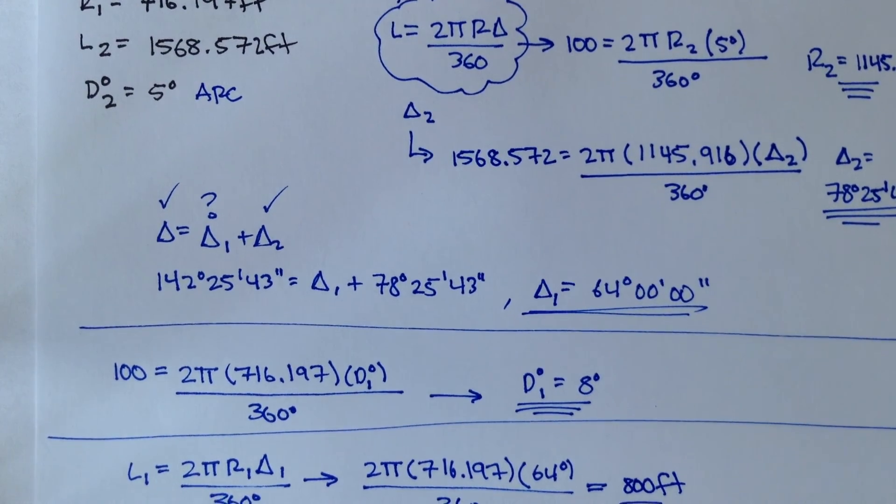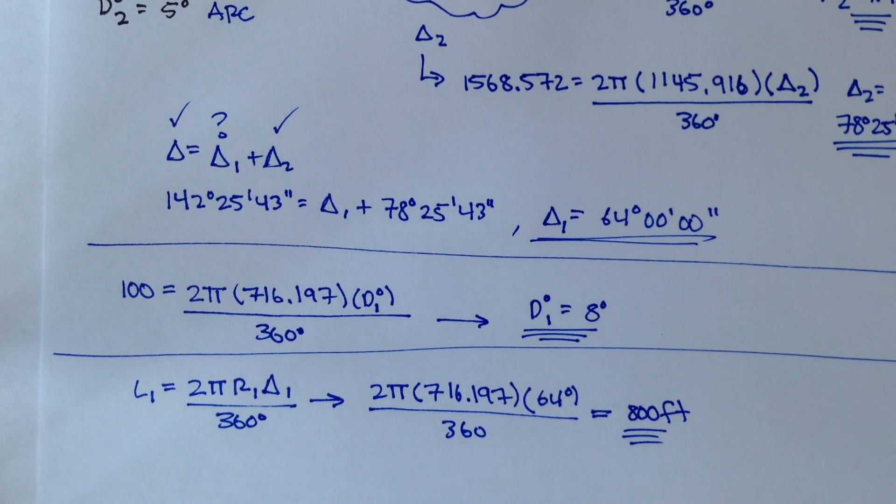So, I'm actually going to stop the video right there. In the next video, we'll continue on with this example and we'll use what we know to figure out what the station for the point of intersection for curve 1 is, the middle ordinate for the second curve, and the external distance for the first curve.